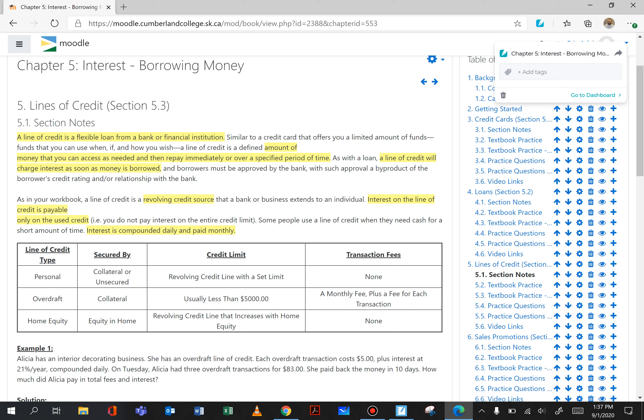And home equity, this is equity in a home so you can get a line of credit based on how much equity you have. Remember equity is the difference between the value of the home minus what is owed on the home. Again a revolving credit line that increases with home equity.